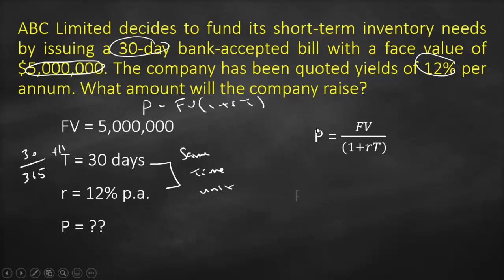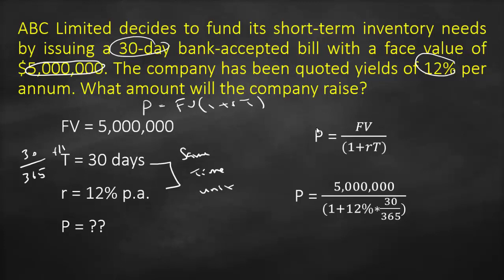Substituting into the formula: we have a future value of 5 million divided by (1 plus 12% multiplied by 30 divided by 365). This gives us a principal of $4,951,166.58.